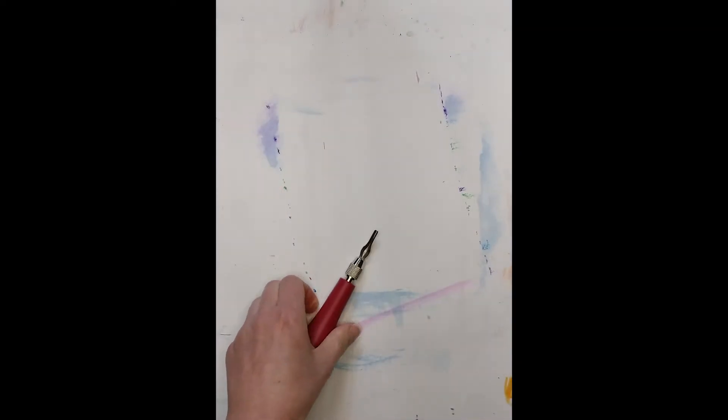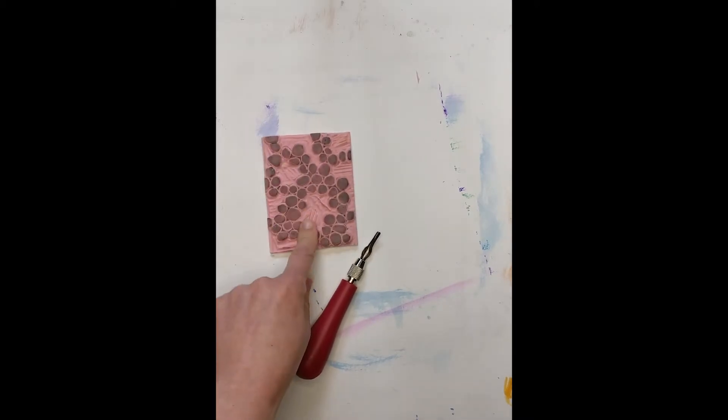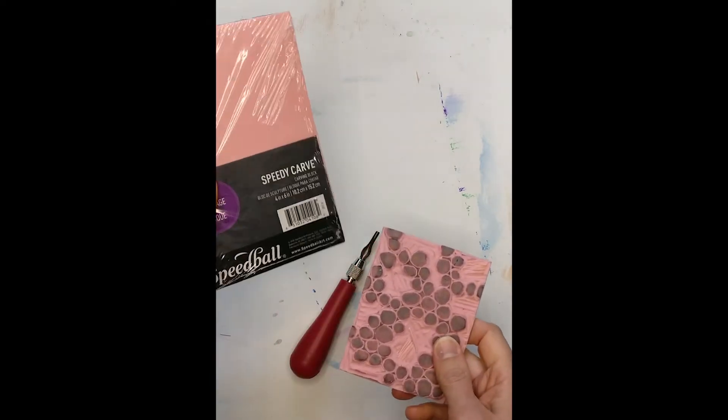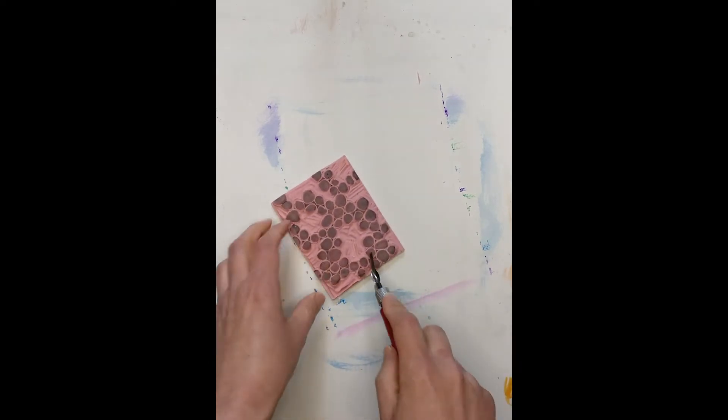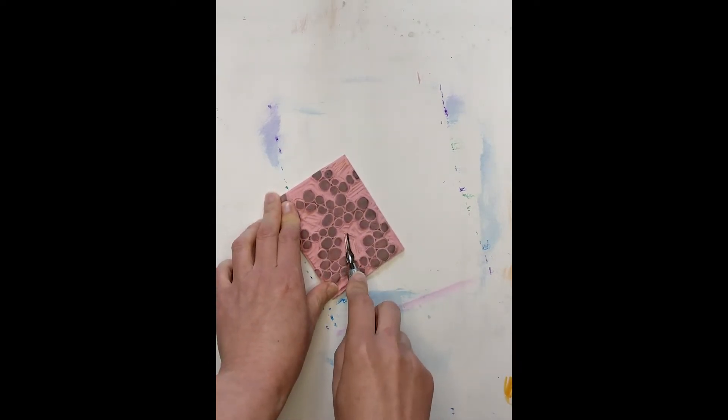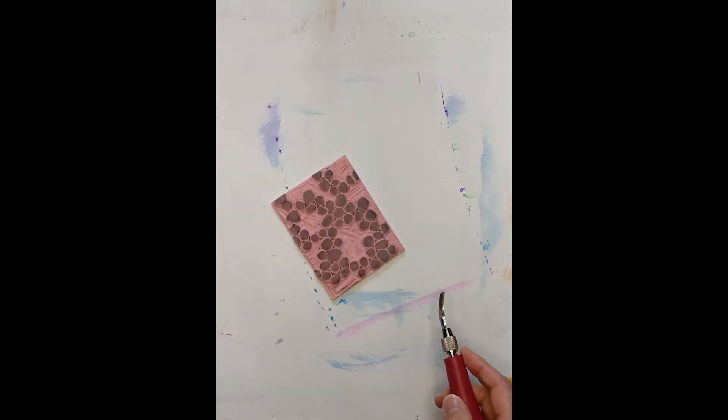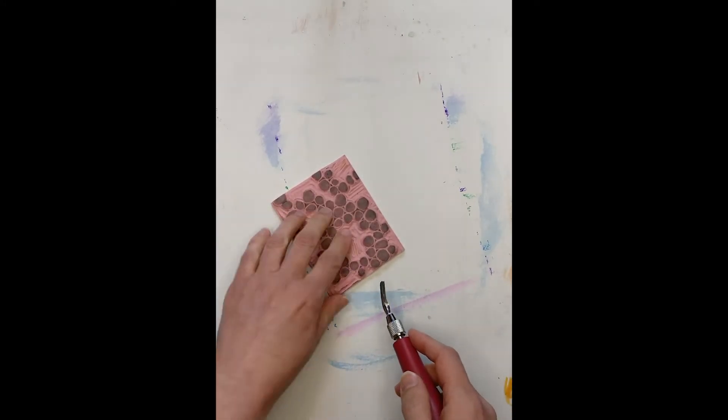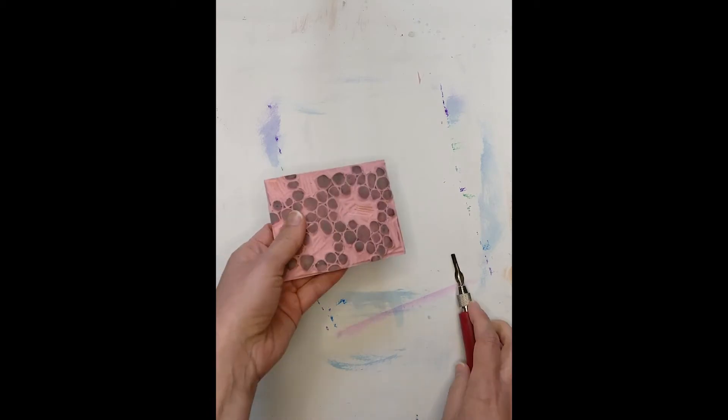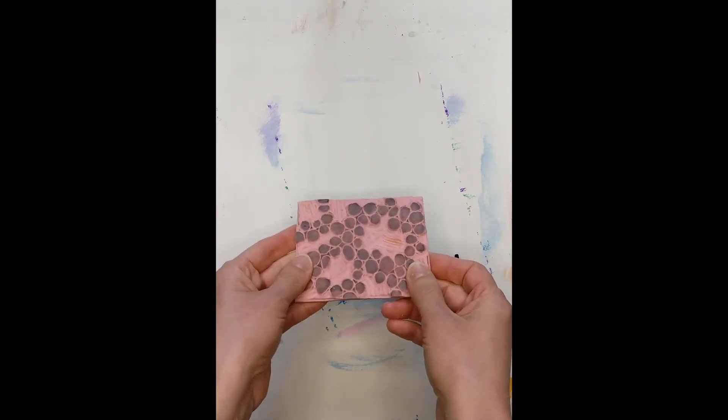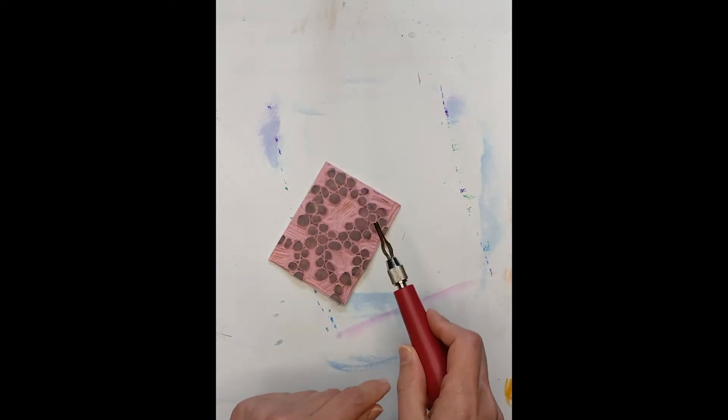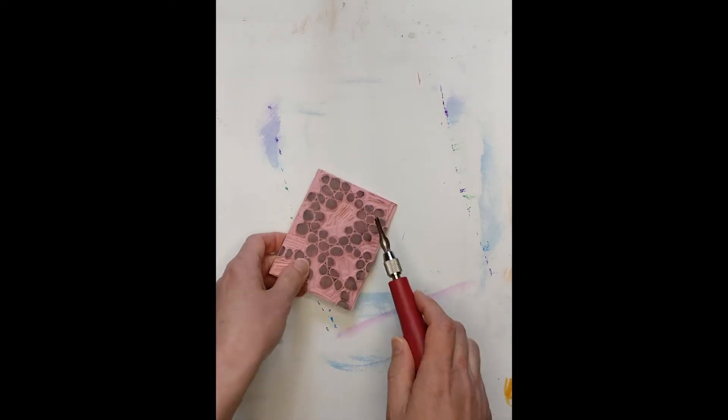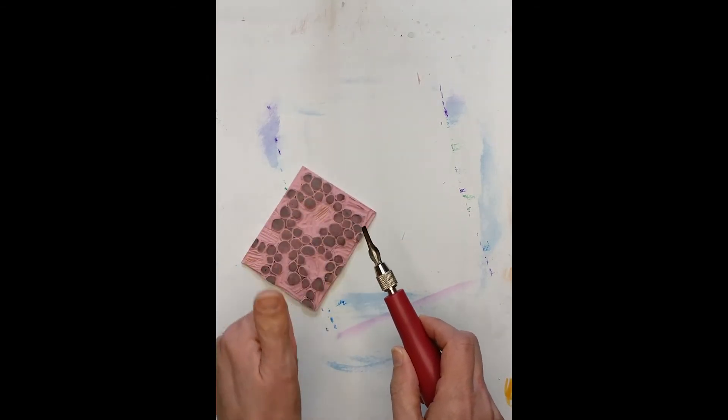But the technique that we're going to be using today is a little more like this. This is actually a piece of what's called speedy carve. But typically artists use wood or linoleum and they carve shapes into the block or they carve space to basically leave a shape to print. It's kind of like creating a stamp in a way. And unfortunately, we're not actually going to be carving with lino cutters today. I'm sure that would be fun, but I don't think the school would probably enjoy that because they're quite sharp.